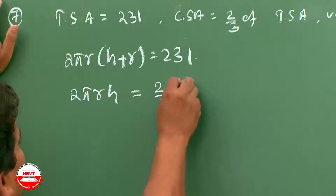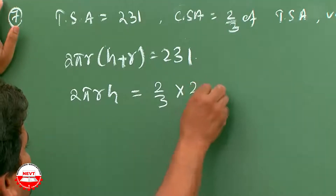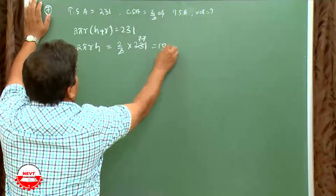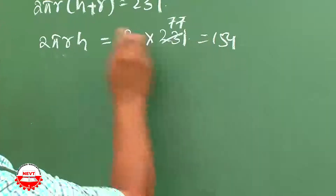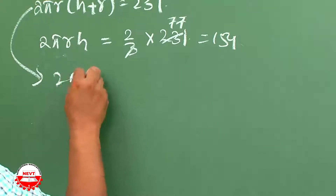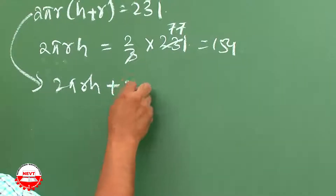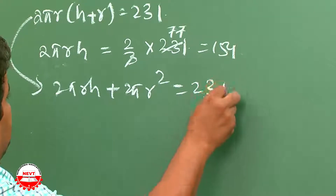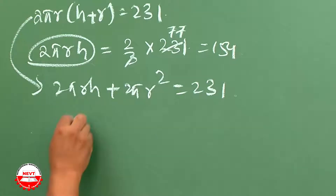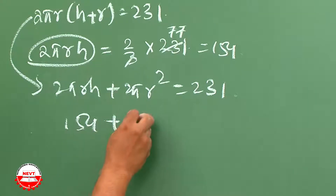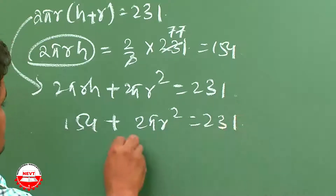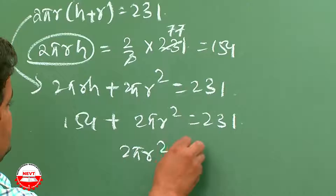Total surface area is 231, so (2/3) × 231 = 154. Therefore 2πrh = 154. Substituting into the total surface area equation: 2πrh + 2πr² = 231, which gives 154 + 2πr² = 231.